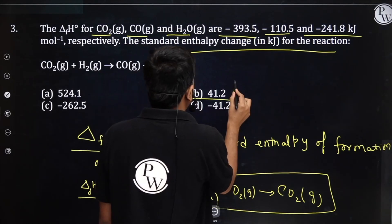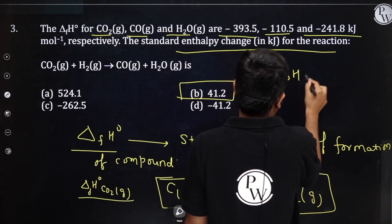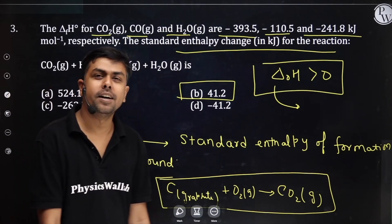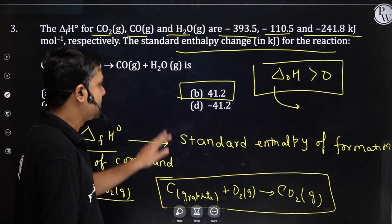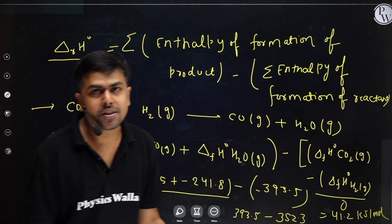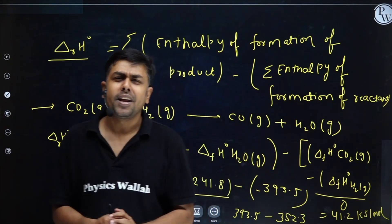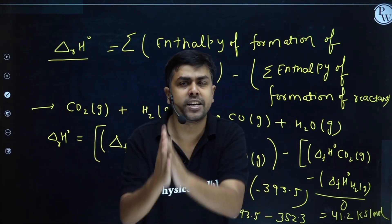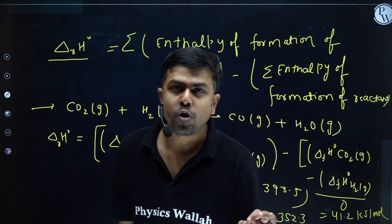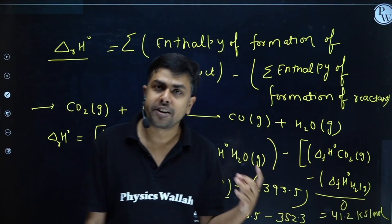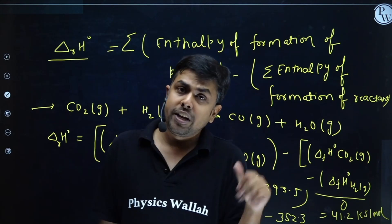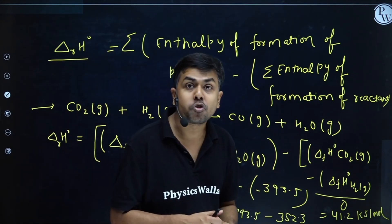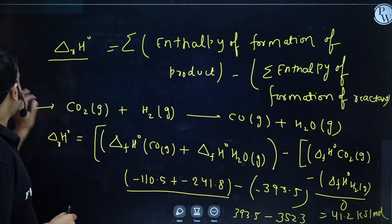The answer is +41.2 kJ/mol and the reaction is endothermic. Regarding standard states of elements: carbon is graphite, oxygen is O2(g), hydrogen is H2(g), fluorine is F2(g), chlorine is Cl2(g), but bromine is Br2(l) (liquid) and iodine's standard state is I2(s) (solid). These are important reference points when ΔHf° = 0.